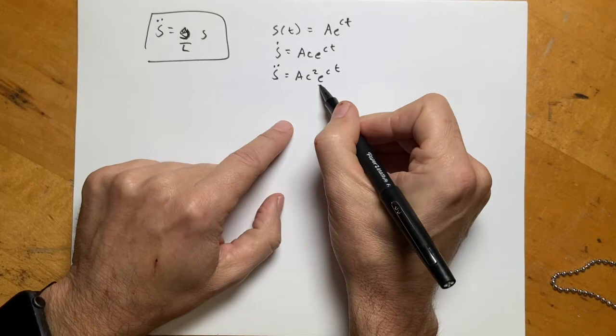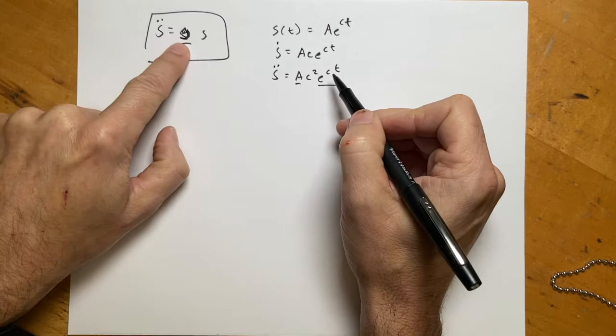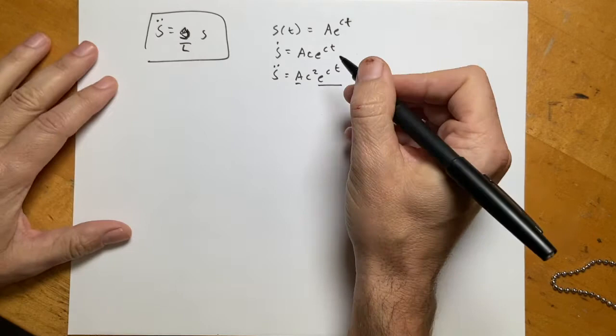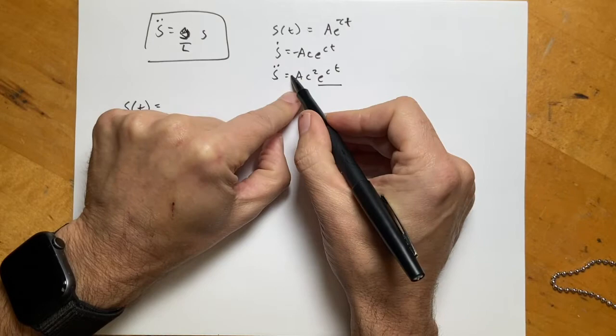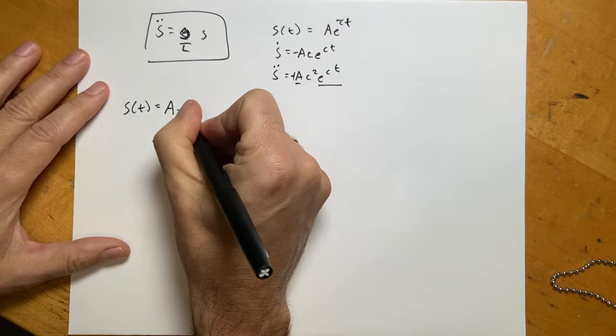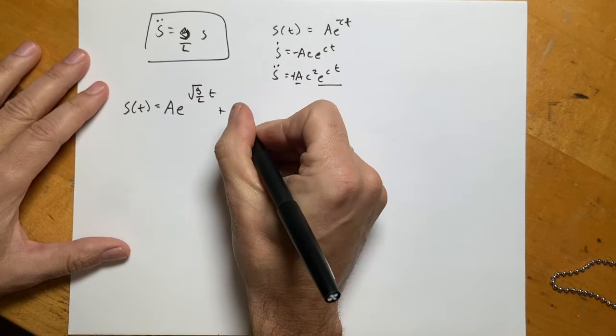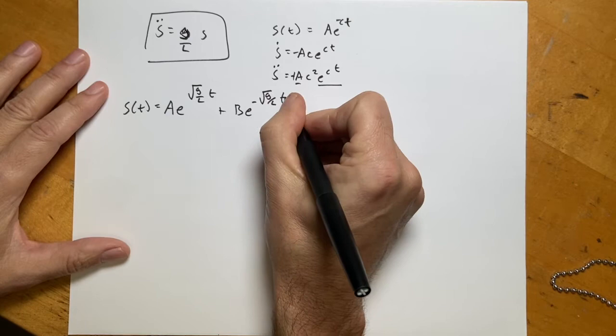Since both the positive and negative exponential work, the general solution has two terms: s(t) = A·e^(√(g/l)·t) + B·e^(−√(g/l)·t). We can find the constants A and B from the initial conditions.